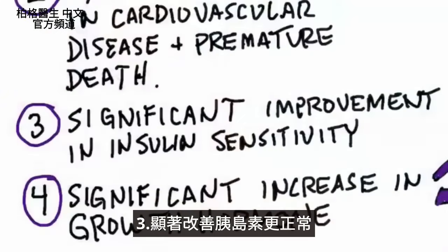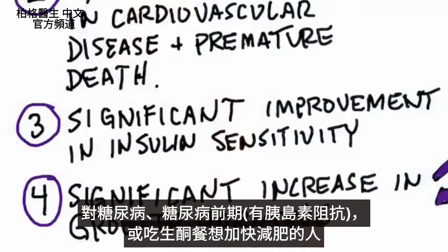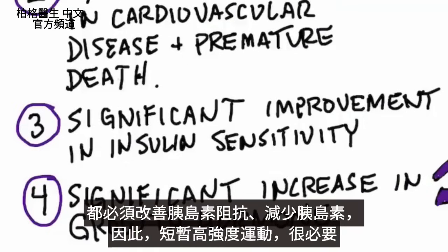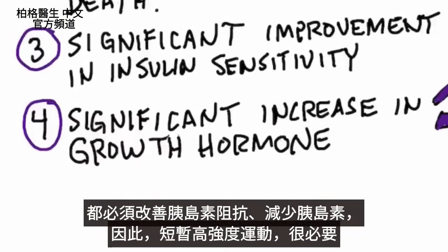Number three: significant improvement in insulin sensitivity. So if you're a diabetic, pre-diabetic, or have insulin resistance, or you're doing keto and trying to speed up the results — which is all about improving insulin resistance and reducing insulin — the intensity of exercise is what you should focus on.